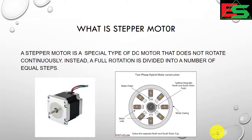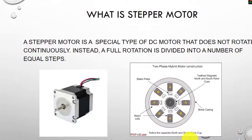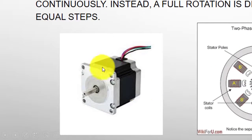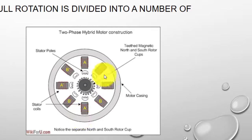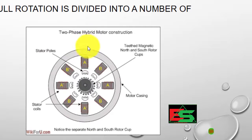What is the stepper motor? A stepper motor is a special type of DC motor that does not rotate continuously. Instead, the full rotation is divided into a number of equal steps. You can see the picture of the stepper motor - this is the external shape and this is the internal manufacturing.